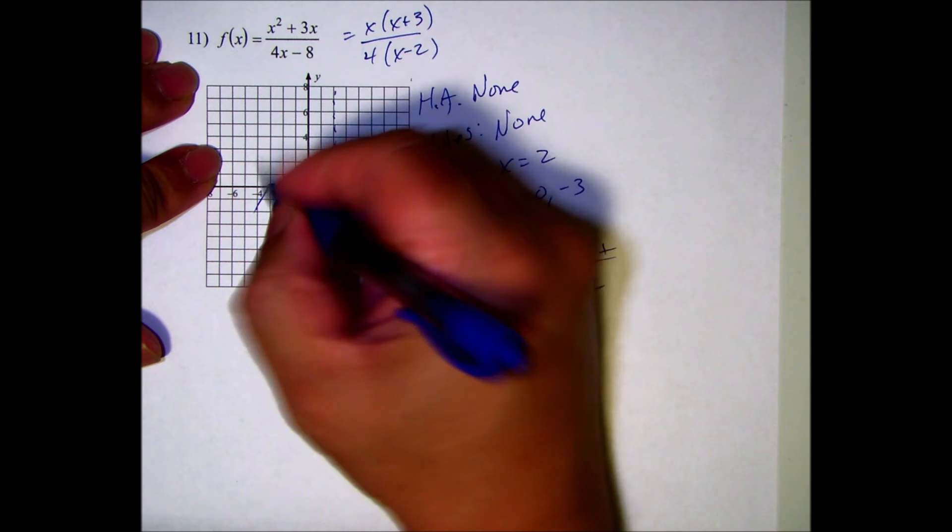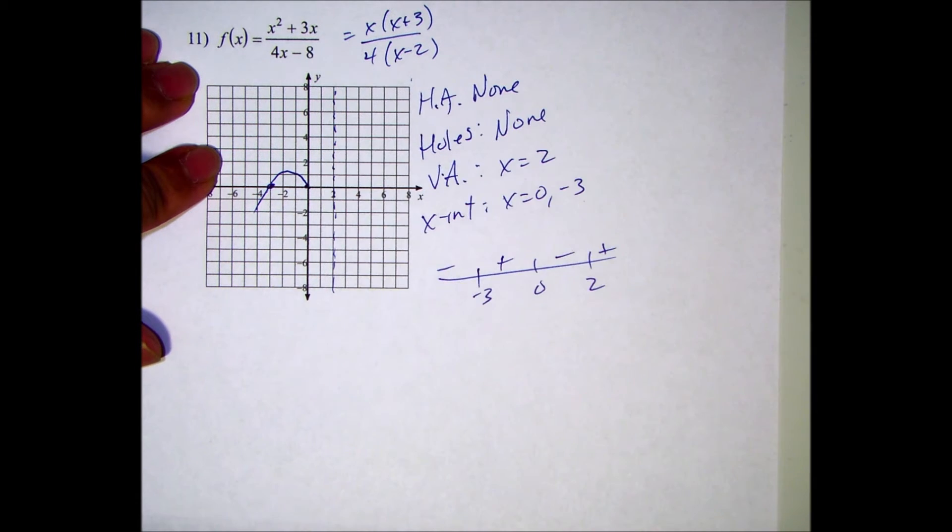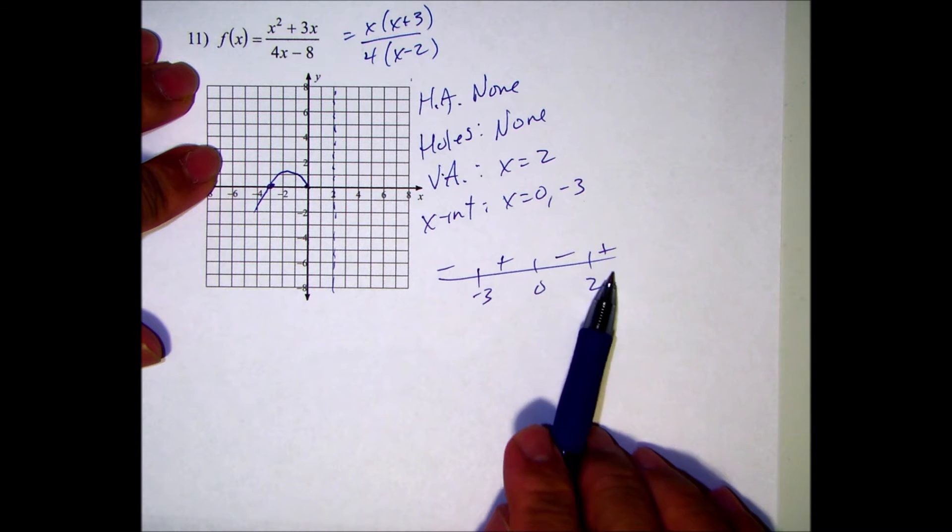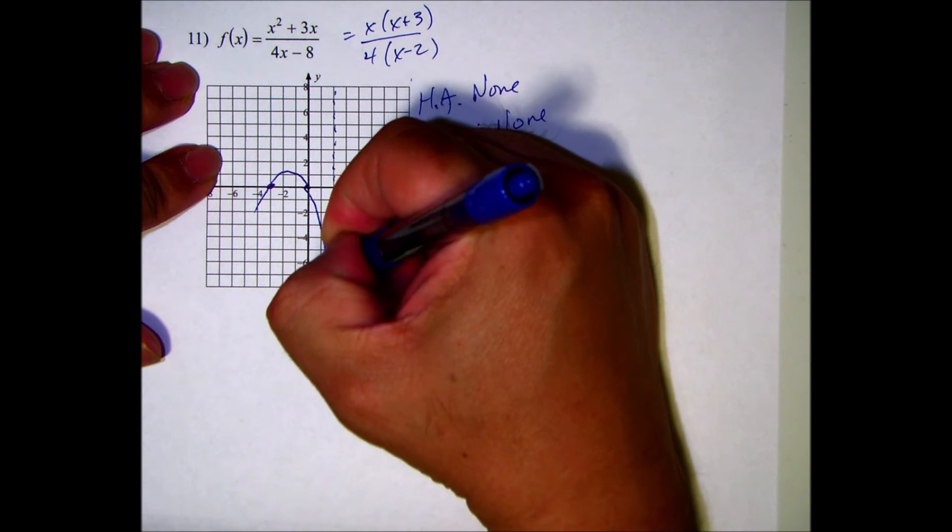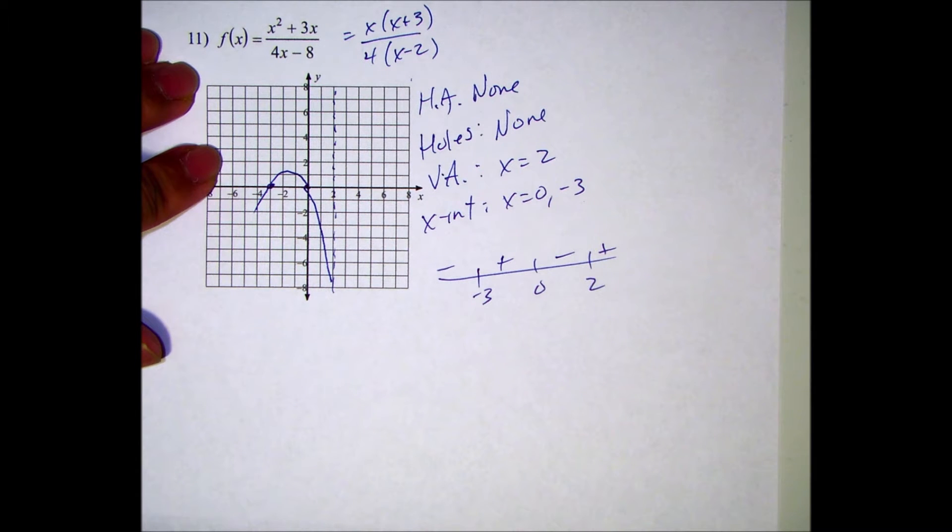Between 0 and 2, it's negative, and 2 is a vertical asymptote, so that means it's going to approach it. On the other side of 2, it's positive, it's a vertical asymptote, so it's way up here.